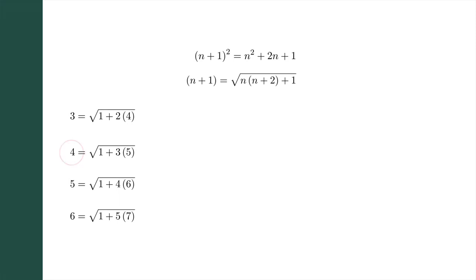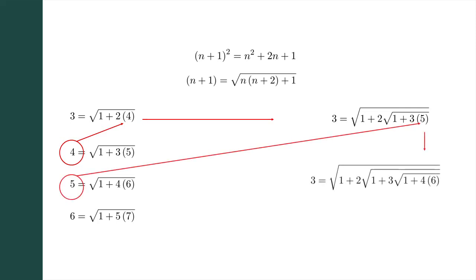Pushing forward, if we take the second equation and substitute the 4 from here into the first one, we get an equation like this. Similarly, if we take 5 from the third expression and substitute it here, we generate a further level of nesting.